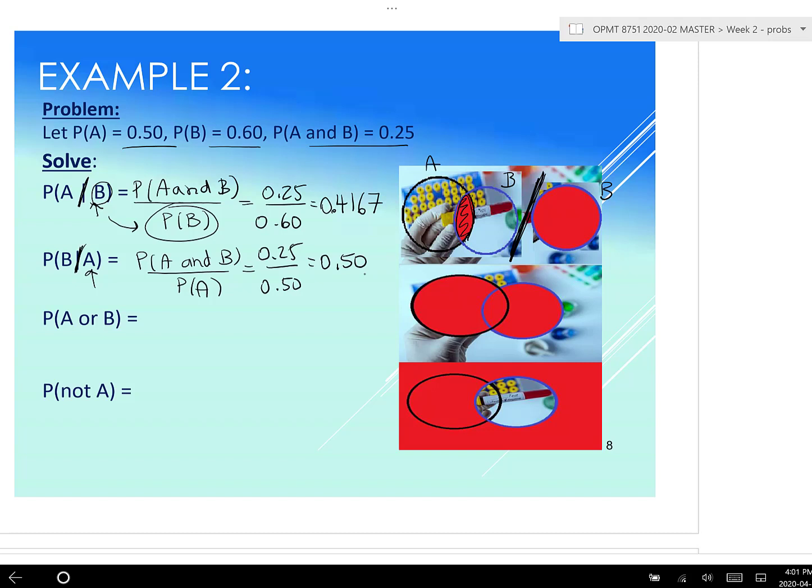Okay. Now the odds of A or B. So that's the odds of A or the odds of B. So we take the 0.50 plus the 0.60. The A plus the B minus the and, and the and is the 0.25. And that gives us, I believe, 0.85. There we go. 0.85. Okay. And finally, so this is this picture right here. Okay. And this is this picture here.